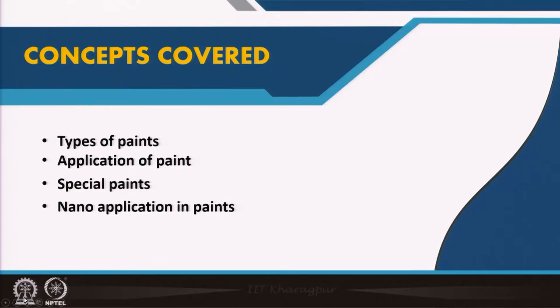In the previous two lectures of this module, we discussed paints and as architects we need to know the different types of paints, what is to be recommended on what type of surface, and how it is to be applied. Today we will finish the paints chapter covering different types of paints, their application, special types of paints, and nano applications specific to paints.